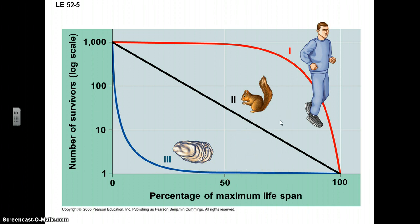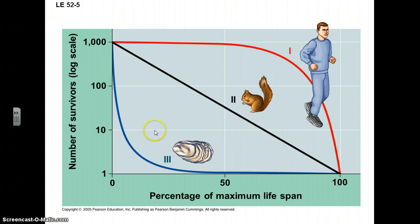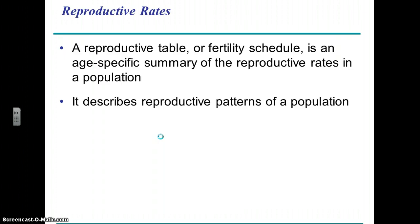With Type 1, there are some generalizations we can make: they generally have fewer offspring but give more parental care, thus increasing survivorship. Whereas with Type 3, these are organisms that tend to have lots of offspring with little or no parental care, and therefore those offspring have low survivorship rates.